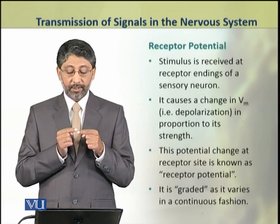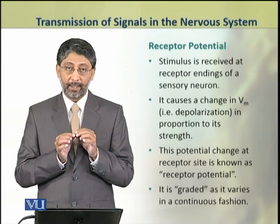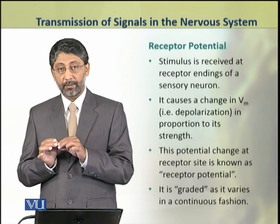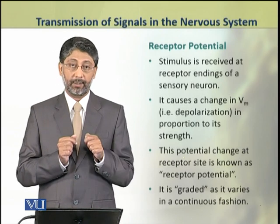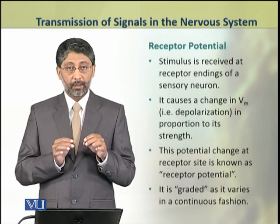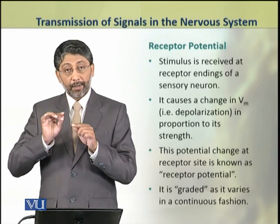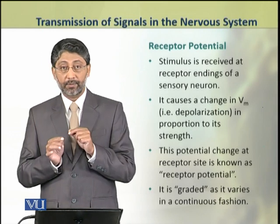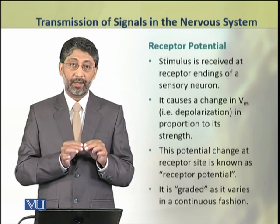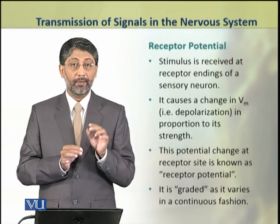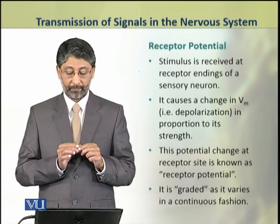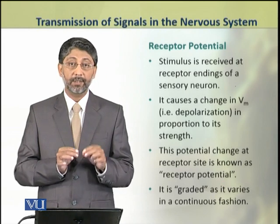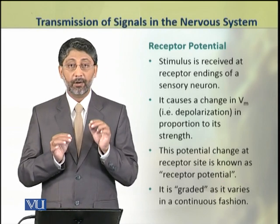When a stimulus is received at the receptor endings of a sensory neuron, a depolarization — that is, a change in membrane potential — occurs. This change happens in proportion to the strength of the stimulus. This potential change at the receptor side is known as receptor potential. This receptor potential is a graded potential because it varies in a continuous fashion.